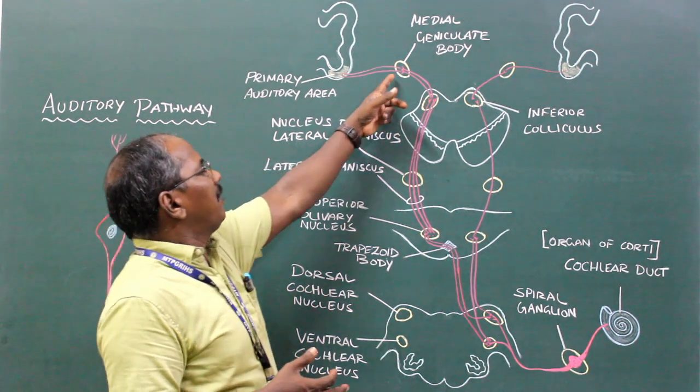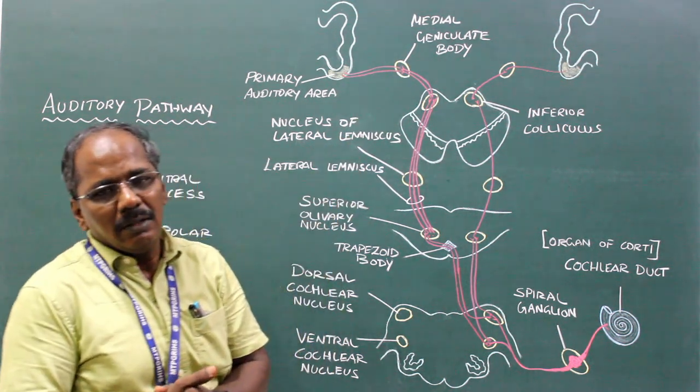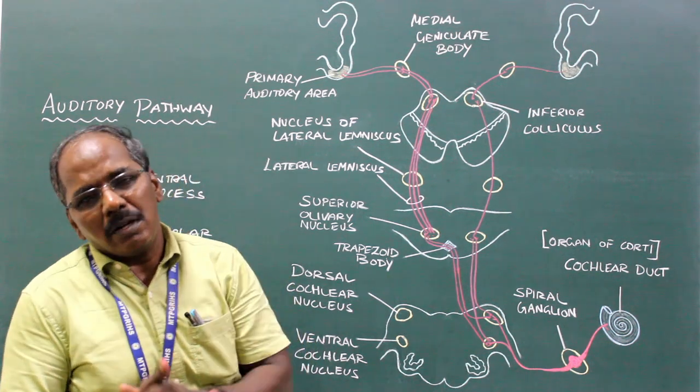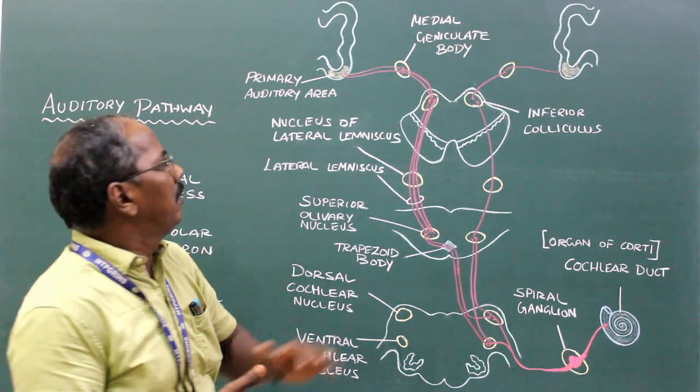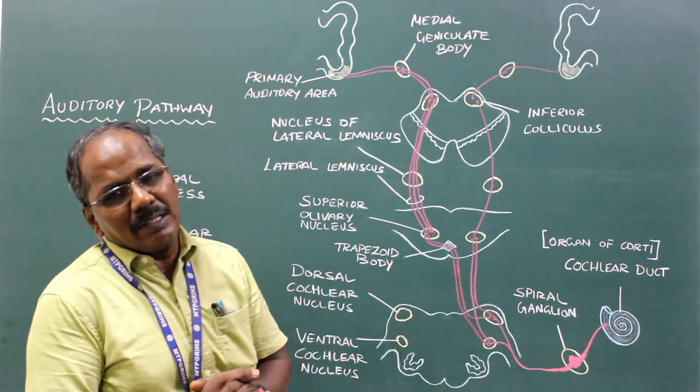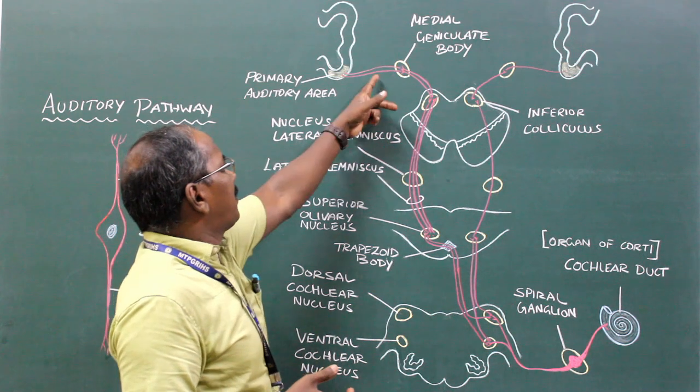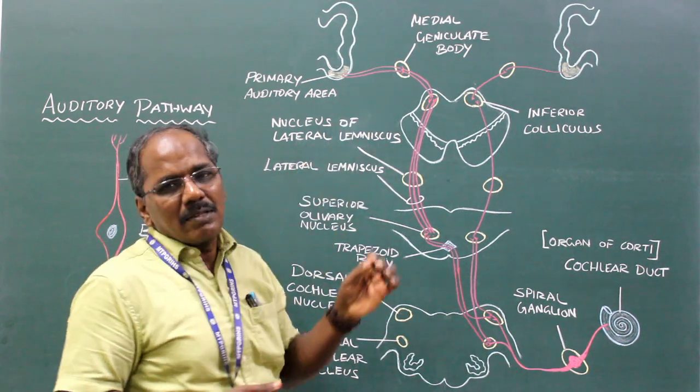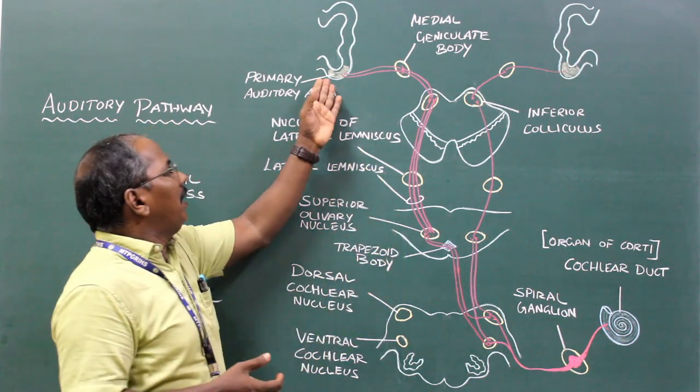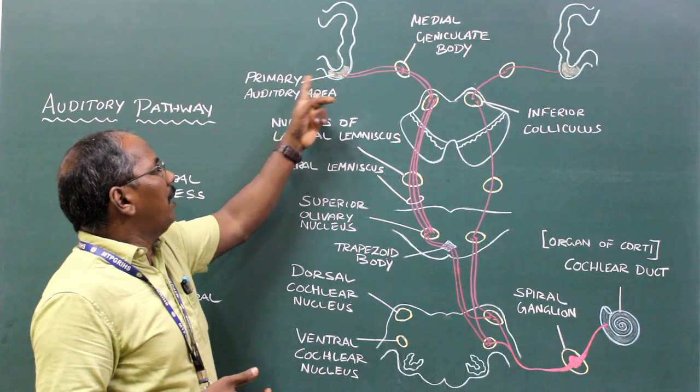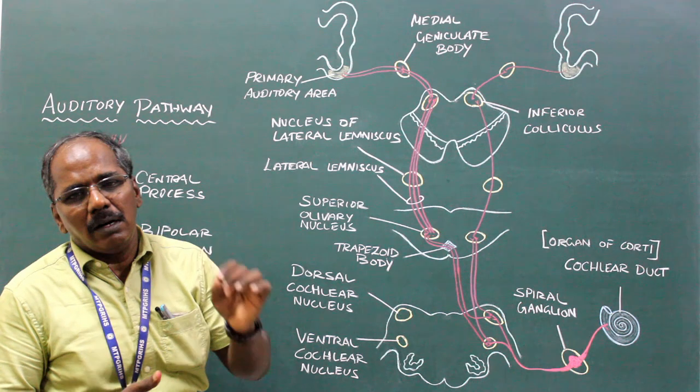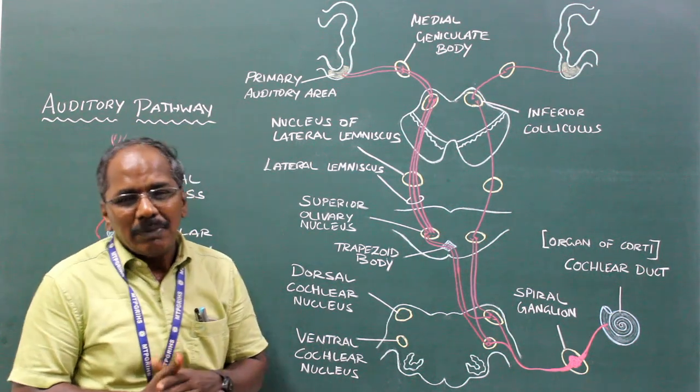The fibers arising from the medial geniculate body constitute the fourth order sensory neurons and form the auditory radiations, which pass through the sublentiform part of the internal capsule and finally relay in the primary auditory area present in Heschl's gyrus or superior temporal gyrus.